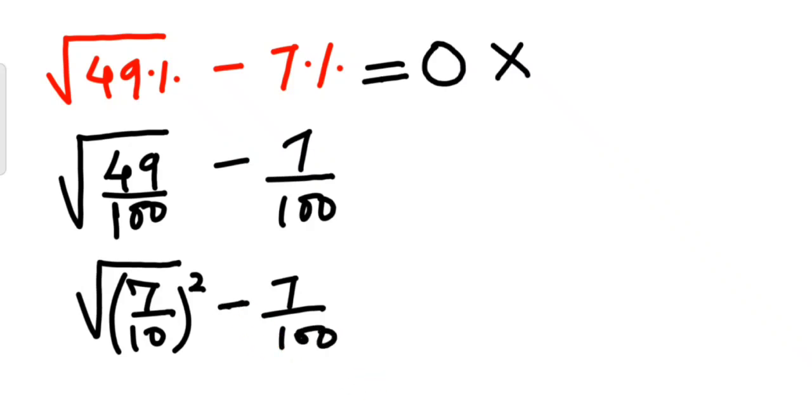Okay, so next what we can do is see, the square and the root can get cancelled. So, what I can say is, this becomes 7 upon 10 minus 7 upon 100.